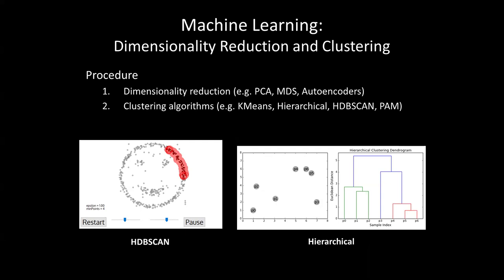For all these dimensionality reduction techniques, we applied four different clustering algorithms: K-means, hierarchical, HDBScan, and PAM, also known as K-medioids.